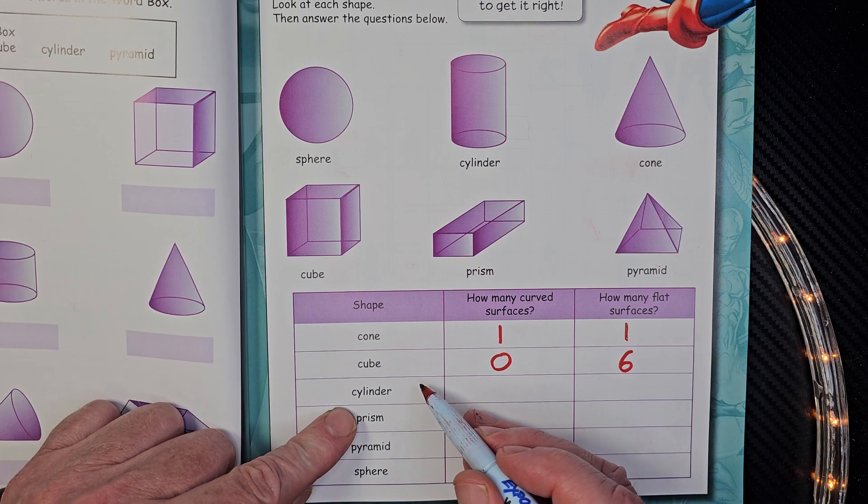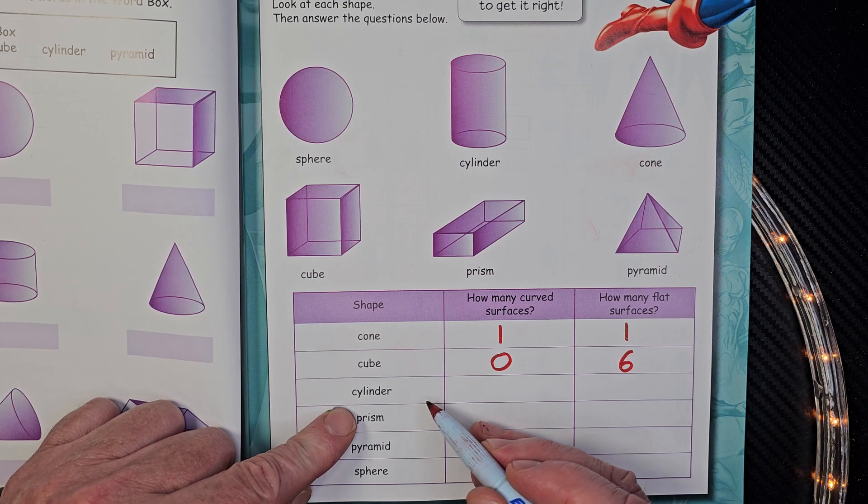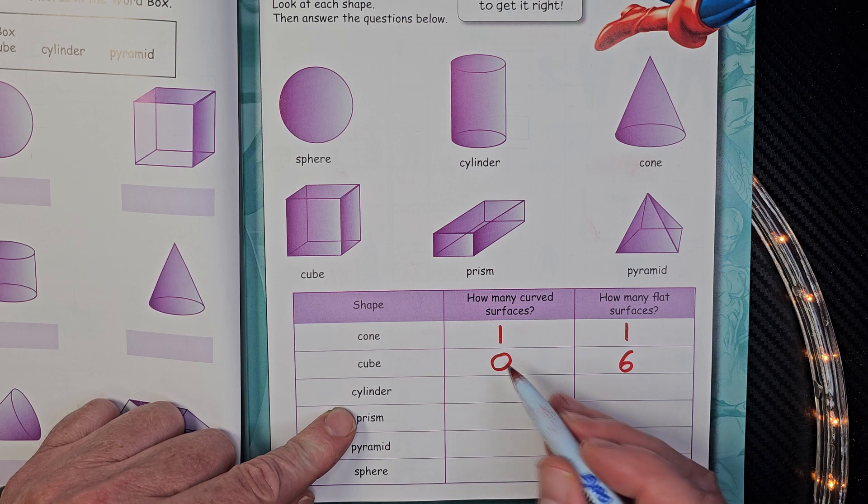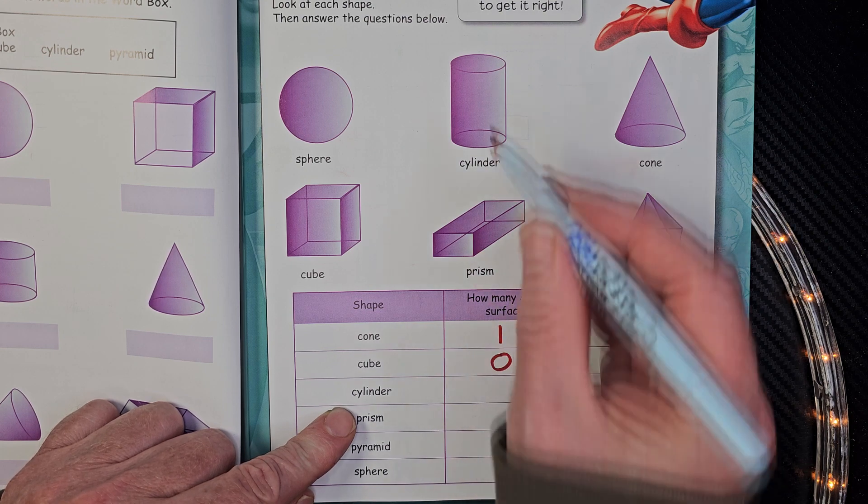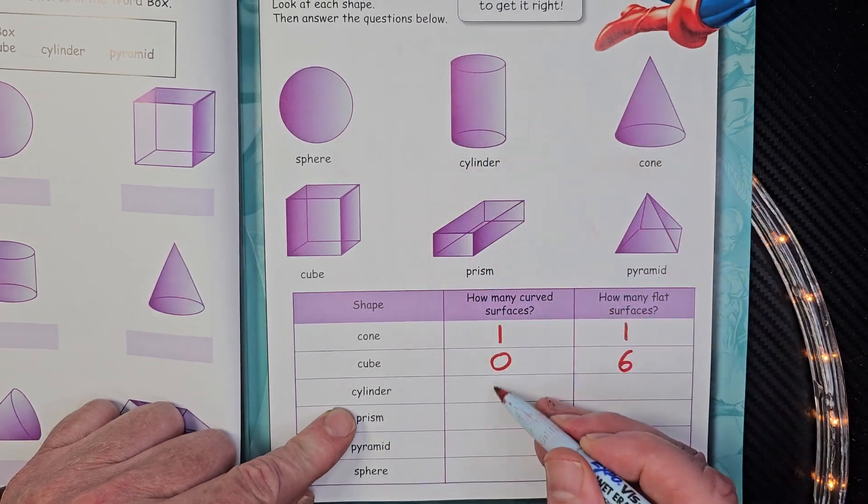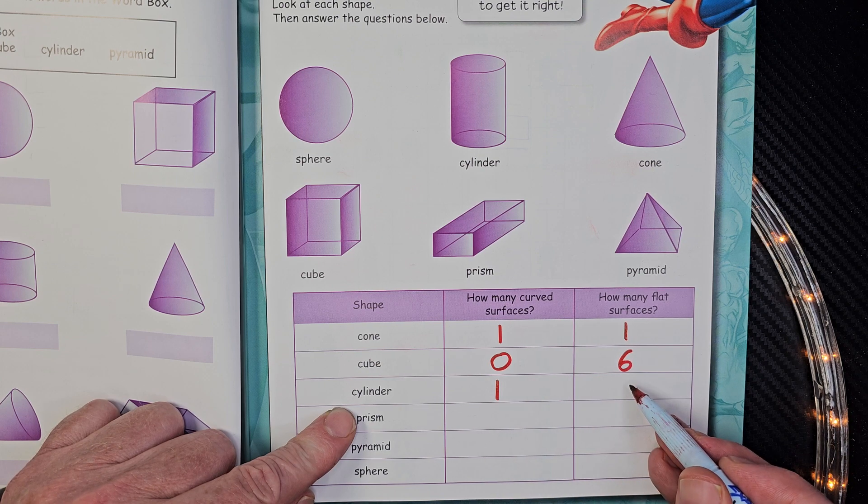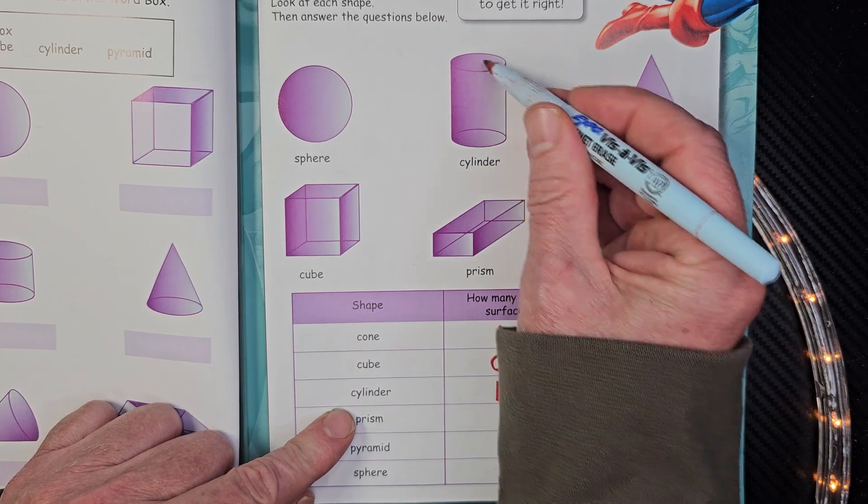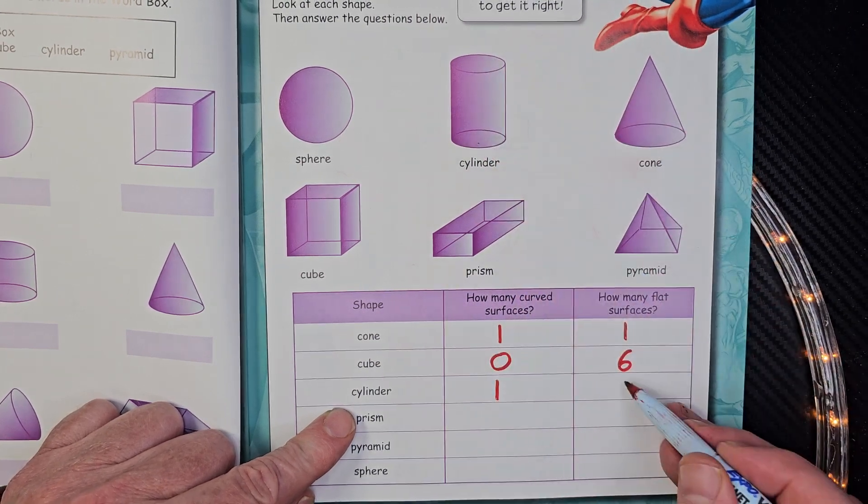Cylinder, cylinder, what's my name? I'm a cylinder. How many curved surfaces? We have one curved surface. And how many flat surfaces? One right here, and one on the bottom. Alright, two.